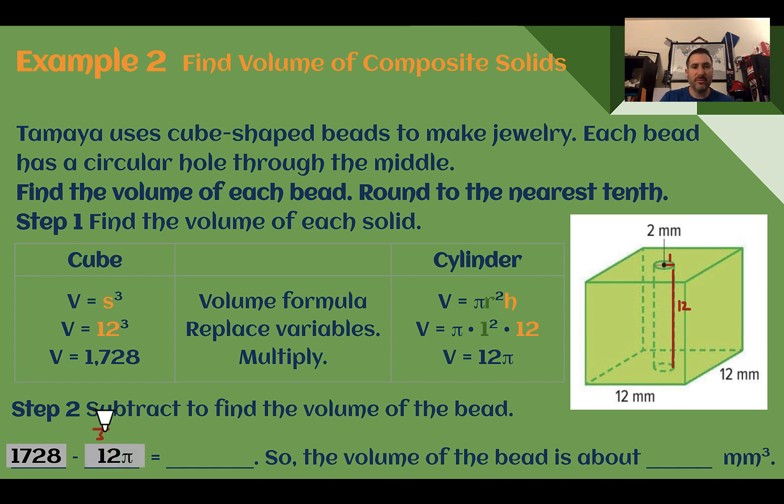Then to find the volume of the overall object, we need to remove the cylinder from the cube. So 1728 minus 12π. This rounds off to about 37.7, so subtracting those, I would get about 1690.3. So this volume, cube minus cylinder, is about 1690.3 cubic millimeters.